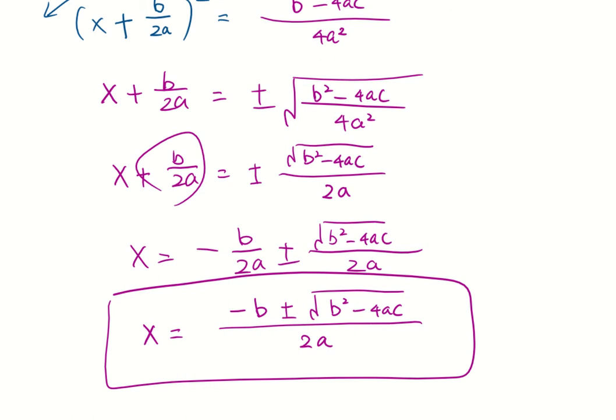That means if you're given an equation in the form of ax squared plus bx plus c equals 0, then your solution can be written in the form of x equals negative b plus or minus square root of b squared minus 4ac over 2a.